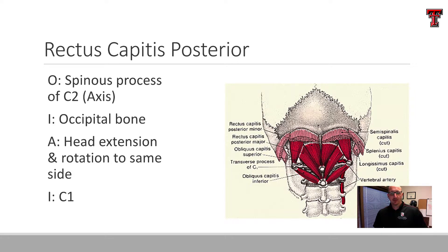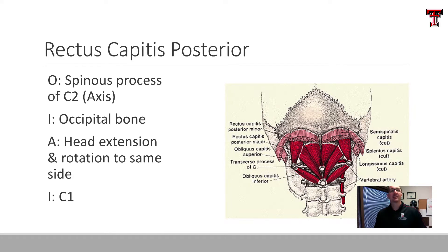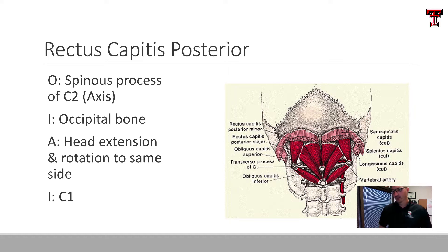The rectus capitis posterior originates on the axis — C2 is the axis of the spine — and inserts into the occipital bone. So it's going to be a head extensor. It has a longer lever arm than either the lateralis or the anterior. It's also going to assist with rotation to the same side, and it gets its innervation from C1. That's the rectus capitis group.